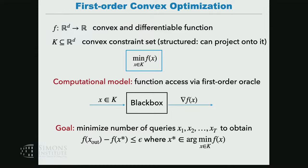Given this gradient oracle, we want to design an iterative method that gives us an approximate solution for the minimization problem. We're not interested in solving it exactly. Instead, given any accuracy epsilon, we like to find a point that is within epsilon in function value of the minimum value f(x*). The focus is on designing iterative methods that construct a sequence of solutions x1, x2, and so on, with iterations that are fairly cheap and a number of iterations that is as small as possible.